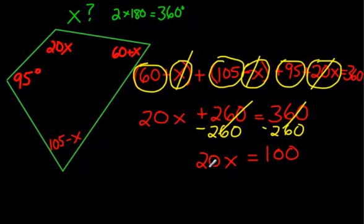And then the last step is, let's get rid of the 20 by dividing both sides by 20. Divide this side by 20. And that leaves us with x equals 5.